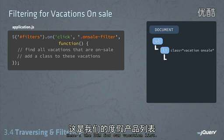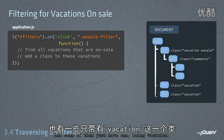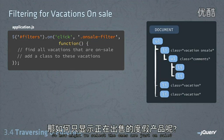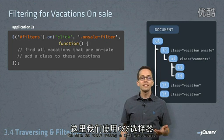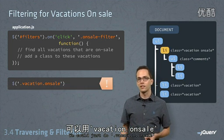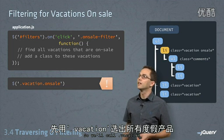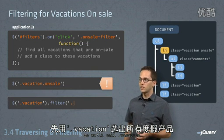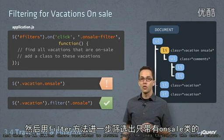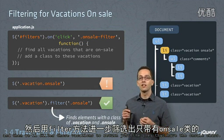Here's the DOM for our vacation list — some of them have two classes: vacation and on-sale, and some of them just have the one class: vacation. To select just the ones that are on sale, we could use a CSS selector like dot vacation dot on-sale, but let's do this using traversing — we'll call dot vacation and then filter those vacations to return just the ones that have the on-sale class.